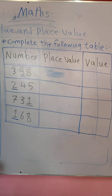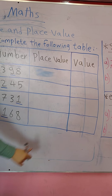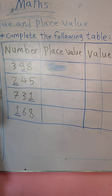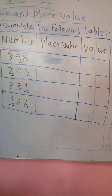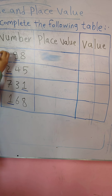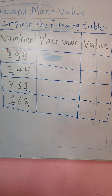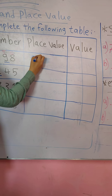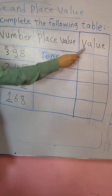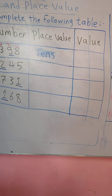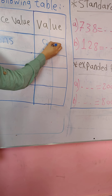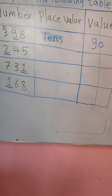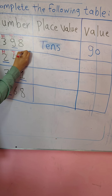We will take an example: complete the following table. We have numbers here, and I'll write the place value and the value of the underlined numbers. I'll write H, T, O. The first example: we have 398. Number 9 is in the T (tens) place, so the place value is tens. The value of number 9 — 9 is in the tens place, so the value is 90.